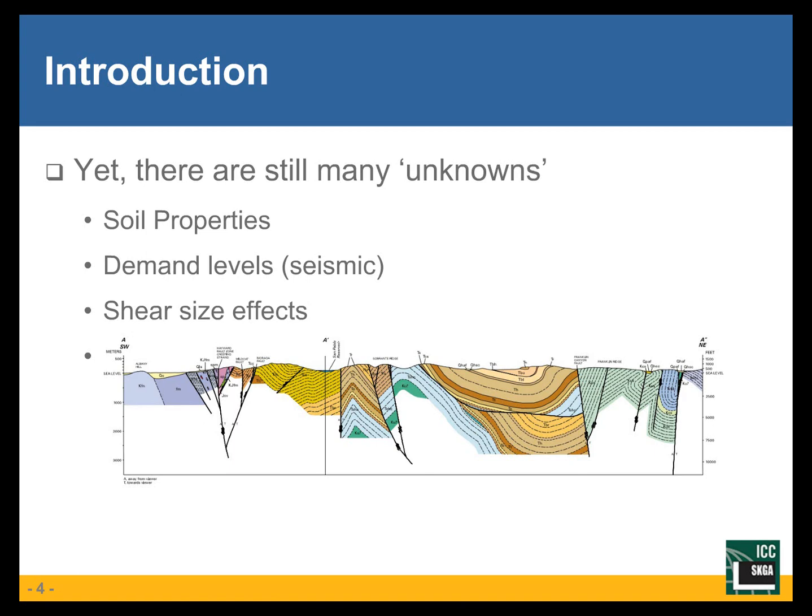Yet it's really important to recognize that there are still so many unknowns when dealing with MAP foundations. Most critically, soil properties — we have much more substantial geotechnical investigations these days, however there is still an inherent unknown about what's happening below grade and the different stratification. This figure shows a section cut through the Bay Area and illustrates how substantially the subgrade conditions can vary across a region. Another substantial unknown is demand levels, specifically related to seismic demands.